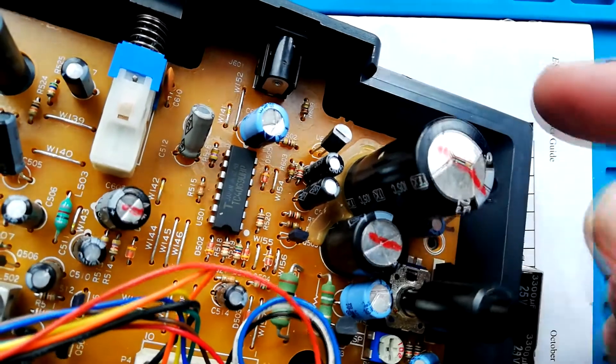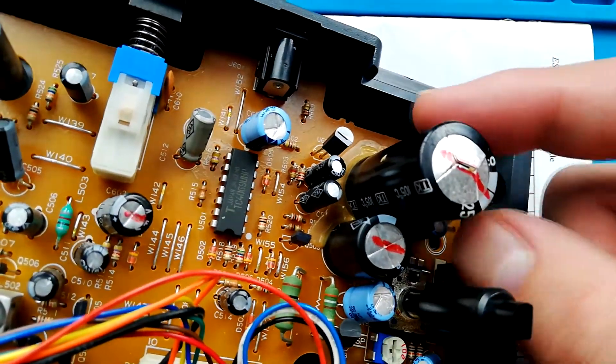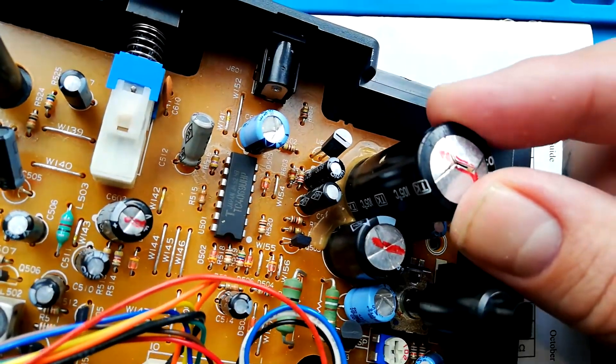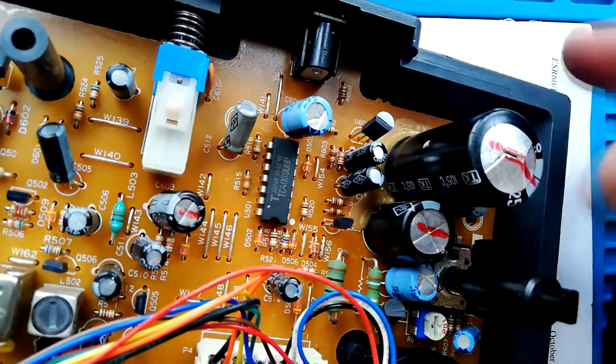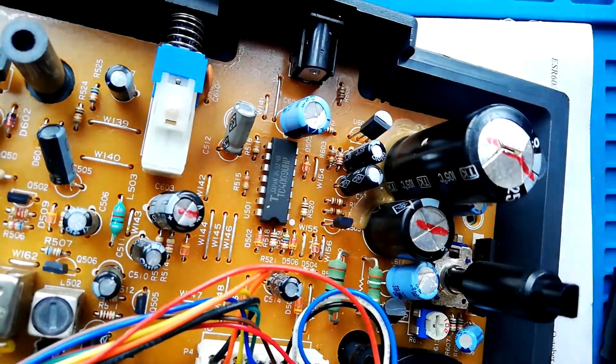These are the filter capacitors that smooth out your rectified DC input. It's quite typical for them to have glue at the base just because they've got a bit of weight to them and so if they're getting jostled around then the weight of the capacitor could disturb the solder connections at the bottom.